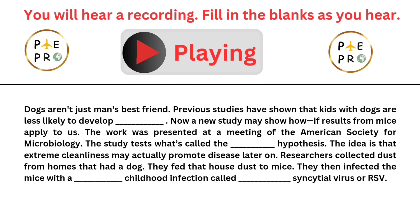These dogs aren't just man's best friend. Previous studies have shown that kids with dogs are less likely to develop asthma. Now a new study may show how this result applies to humans. The work was presented at a meeting of the American Society for Microbiology and tests what's called the hygiene hypothesis — the idea that extreme cleanliness may actually promote disease later on. Researchers collected dust from homes that had a dog, fed the house dust to mice, and then infected the mice with a common childhood infection called respiratory syncytial virus, or RSV.